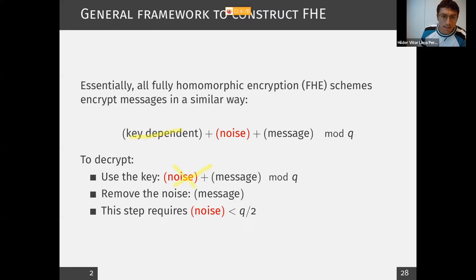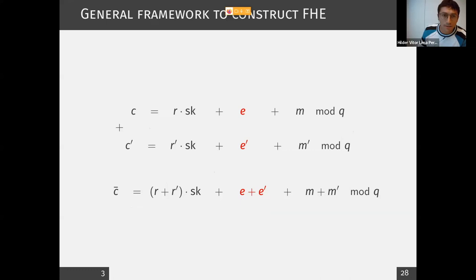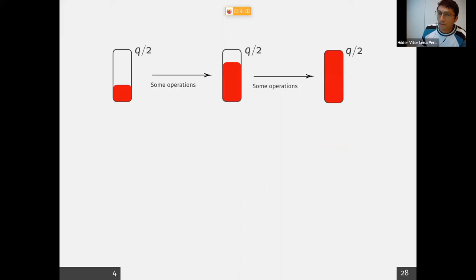To remove the noise, this step requires that the noise is smaller than some bound, for example smaller than Q over two. With this structure, we already have additions essentially for free. If you have two ciphertexts with this format and add them, you get again a random value times the secret key and the messages are added. But as is well known, the noise is also growing — for multiplication as well. Usually FHE evaluations start with some ciphertext that has some noise and a noise budget. We perform operations and the noise grows, up to this limit.